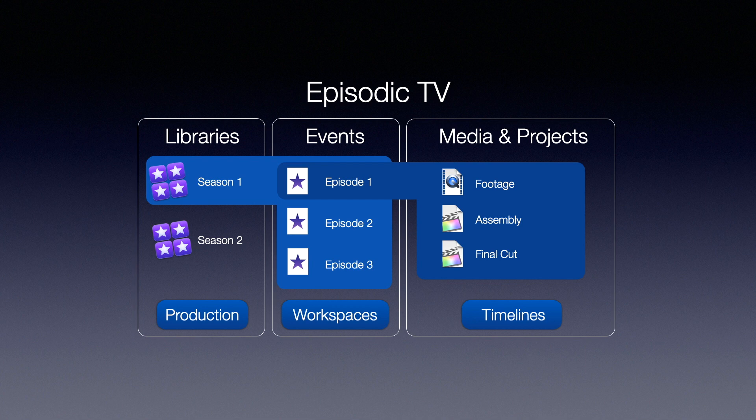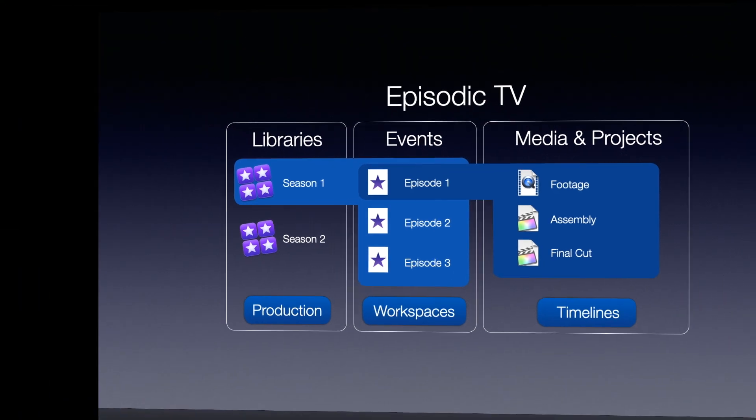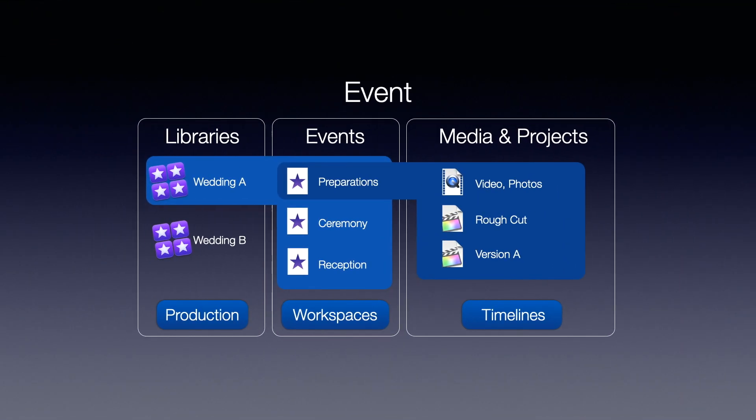Alternatively, you could have a library for each single episode. Another example would be an event like a wedding, where each wedding would have its own library and the events are the buckets within that library for each part of the wedding. The preparations could be an event, the ceremony could be an event, and the reception. Within each event would be the video, the photos, the graphics, the audio for that particular event as well as the timelines for that event.